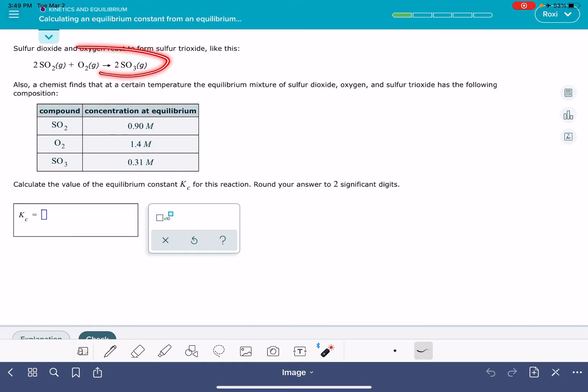In this problem, you're given a chemical reaction and the concentration of each of the three substances when the system is in equilibrium, and you're asked to calculate the value of the equilibrium constant.